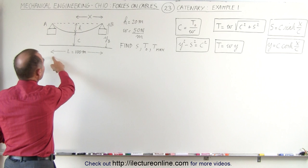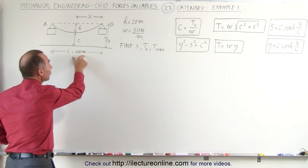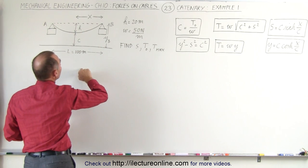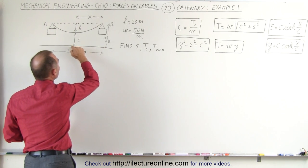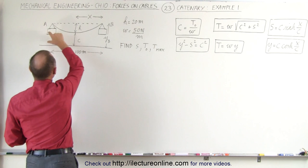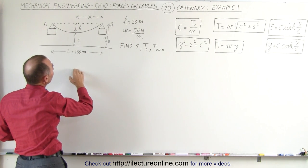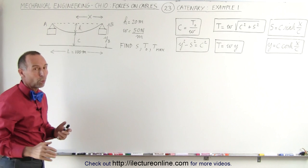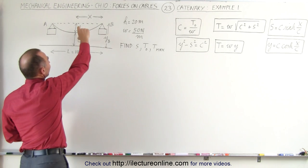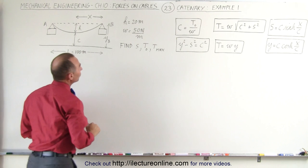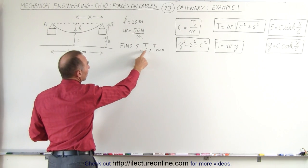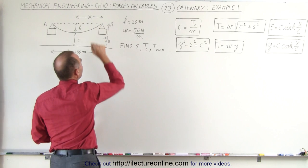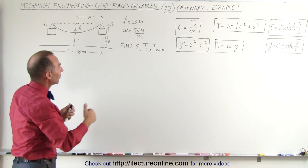We have a hanging cable. The span — the length from point A to point B — is 100 meters, but that doesn't mean the length of the cable is 100 meters. The length of the cable will be S and will be greater than 100 meters. The distance from the origin to the support points is Y_B or Y_A, and X — the distance from the origin to the support points on either side — will be half of 100 meters, or 50 meters. We're given that the sag H equals 20 meters. The objective is to find S (the cable length), the minimum tension at the bottom, and the maximum tension at the attachment point, where the cable angle relative to horizontal is greatest.